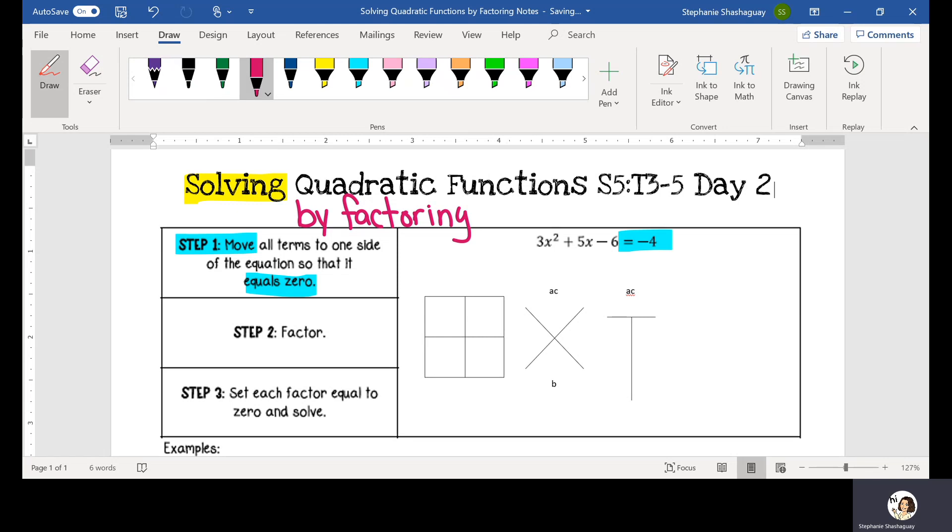In order to do that, if I have a negative four, I have to take this negative four and move it over the equal sign. So to do that, I'm going to do the inverse and add four to both sides. So step one was to move all terms to the left side or the same side of the equal sign. So I'm going to have 3x squared plus 5x and then minus two, because negative six plus four is equal to a negative two.